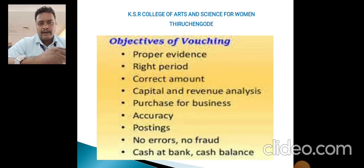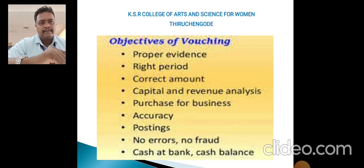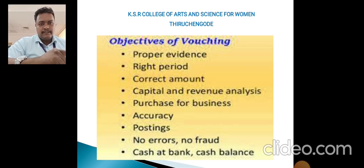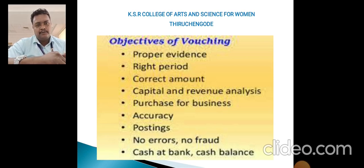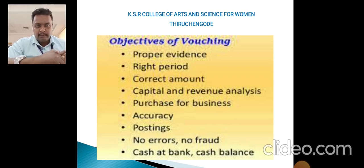The objectives of vouching: the first one is proper evidence — once a transaction happens, the company must have proper evidence. The second one is the right period — the voucher date is very important because the transaction that happened today must have the same date recorded.